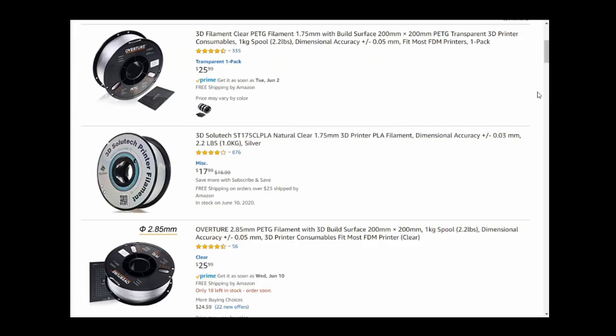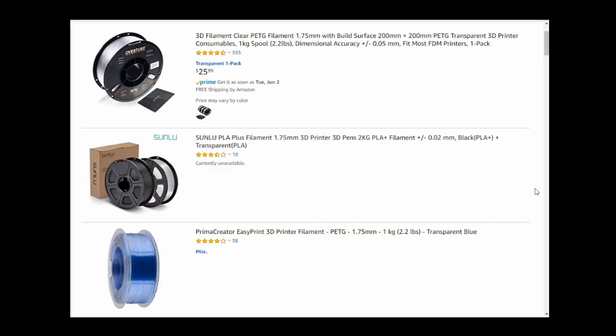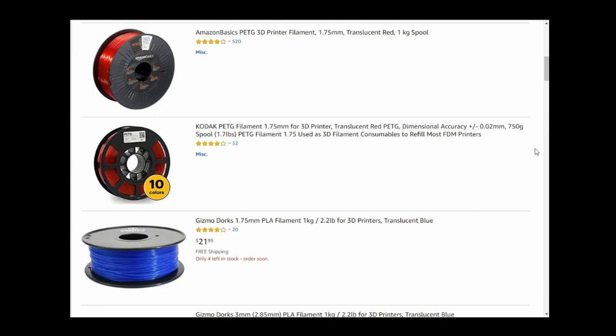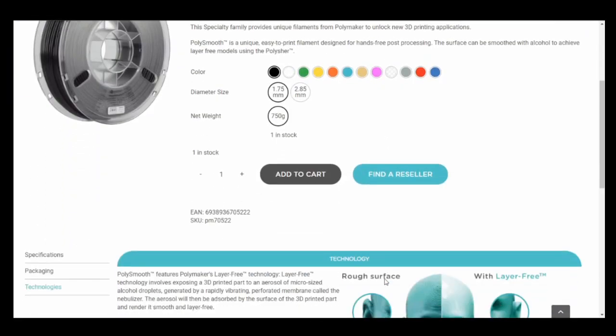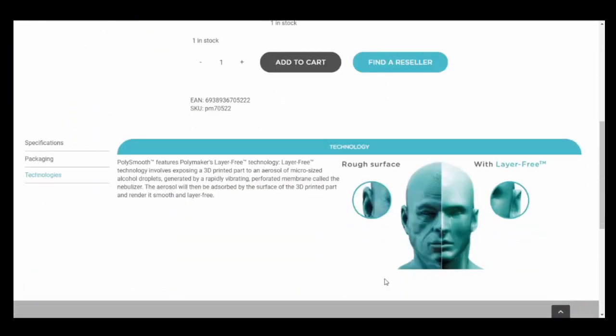When you go searching, the names I see range from clear and transparent, which are completely misleading, to translucent and see-through, which I think are more accurate names. Whatever the names are, the results will be similar to what you see in this video. The only exception to this is if the filament has some special capability, like poly-smooth filament, which requires extra post-processing and costs a lot more.